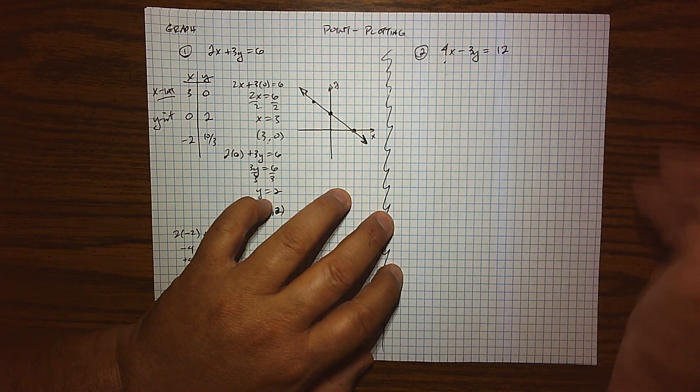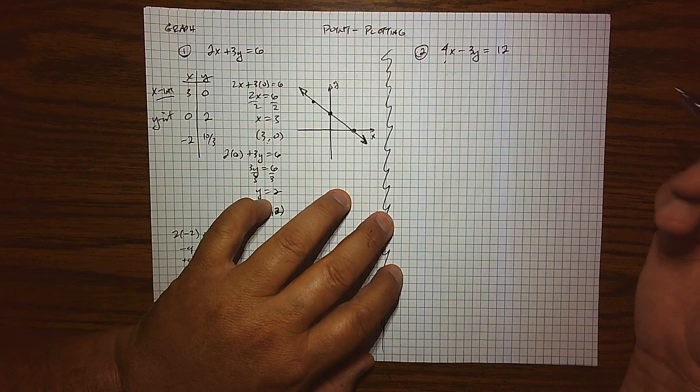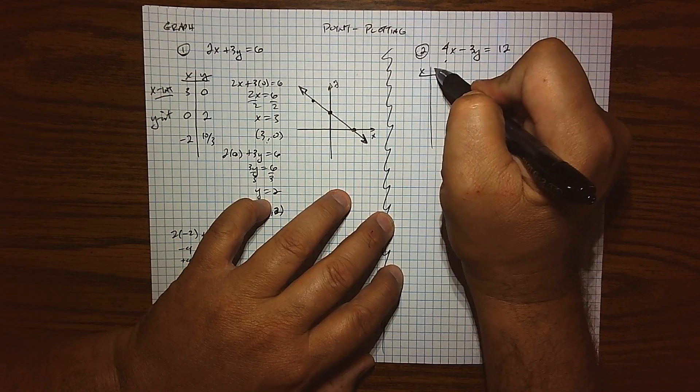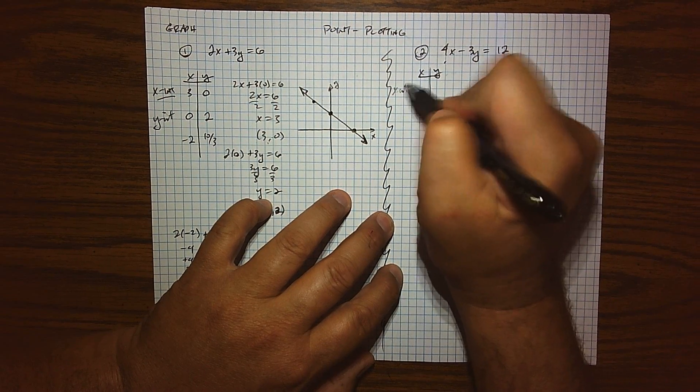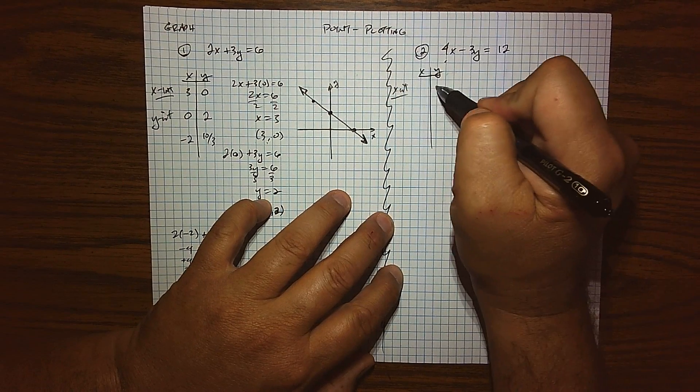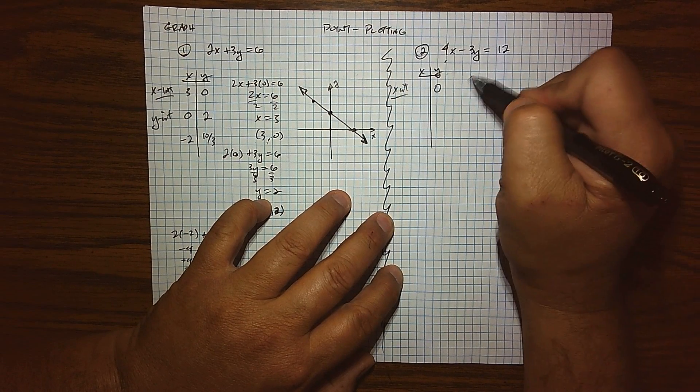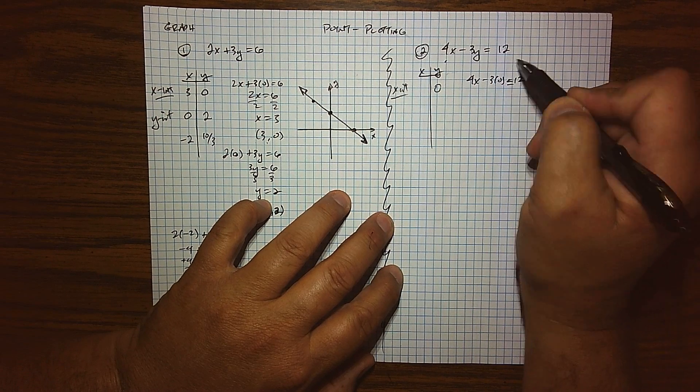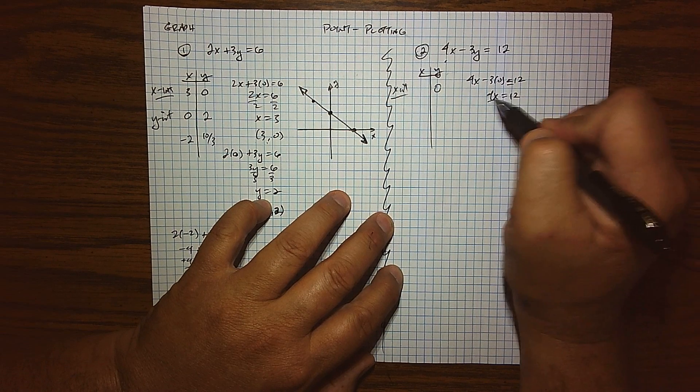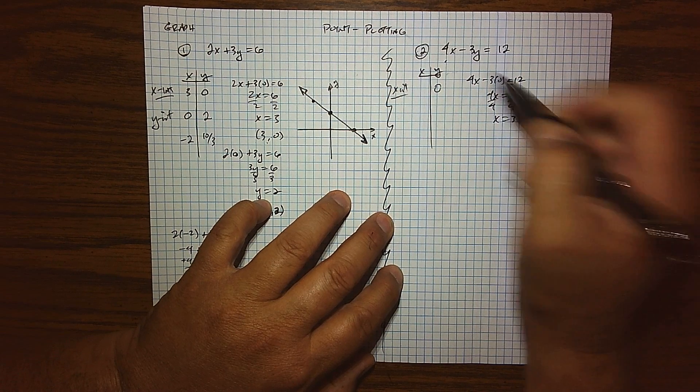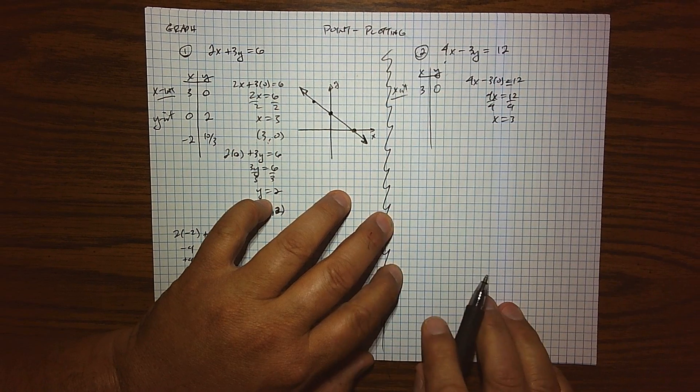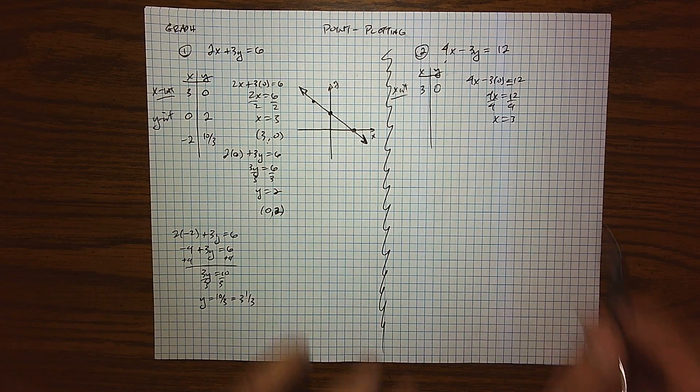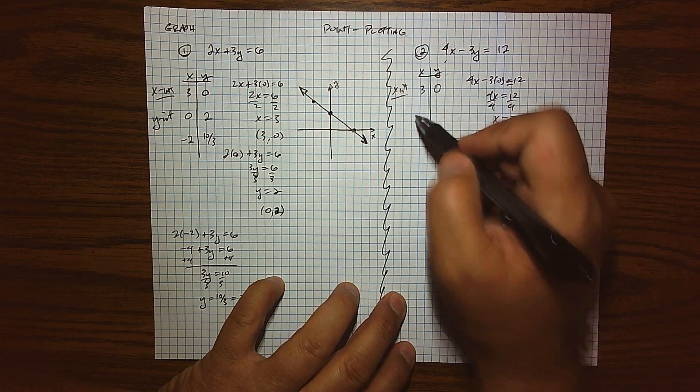So 4x plus 3y equals 12. Again, we're going to point plot this. So I'll begin organizing myself in a little grid. We'll begin by finding my x-intercept. By definition, y is equal to 0. So when I plug that into the equation, anything times 0 is 0. So we're left with 4x equals 12. Do a quick division, x equals 3. So we end up with 3, 0. Not all x-intercepts are 3, 0. I probably should have made a better example, but yeah, it is what it is.